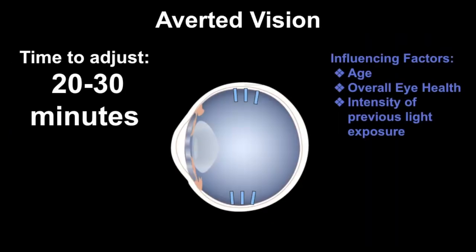It is important to note that averted vision only works when you give your eyes enough time to adjust. Typically, it takes between 20 to 30 minutes for your eyes to adjust through a process called dark adaptation. There are some factors that influence this, such as age, overall eye health, and the intensity of previous light exposure.